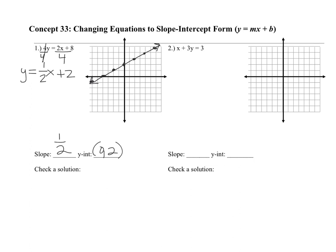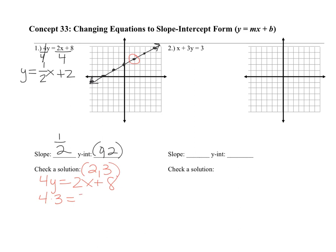To check a solution, pick one of the ordered pairs along the line — these are the ordered pairs that make the equation true. I typically choose not to pick the y-intercept. I'm going to pick the ordered pair (2, 3) and plug it into the original equation: 4y = 2x + 8. Plug 3 in for y and 2 in for x: 4 × 3 = 2 × 2 + 8, so 12 = 4 + 8 = 12. That ordered pair makes the equation true.